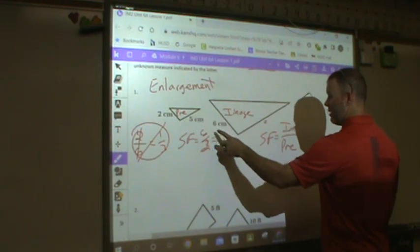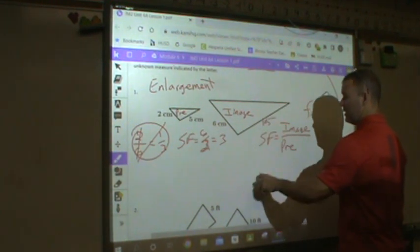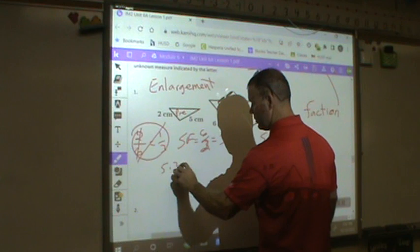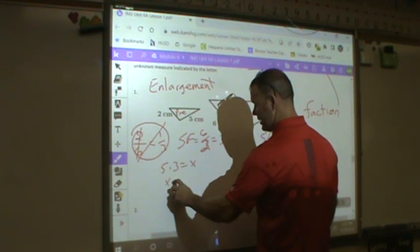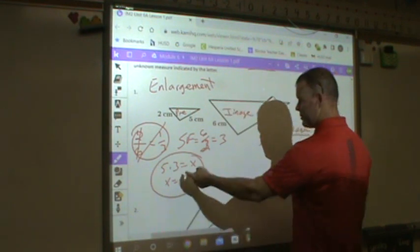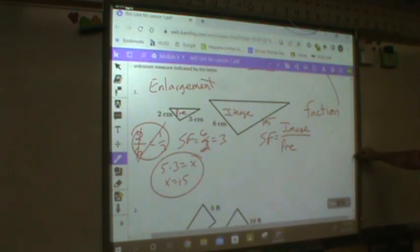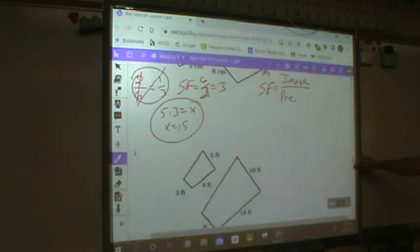So 5 times my scale factor, 3, is 15. So 5 times 3 equals x or x equals 15. There is my work at how I found x.